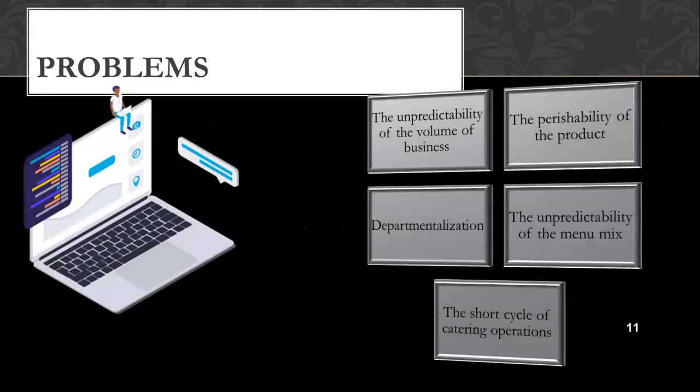Now, what are the problems in the food and beverage control system? We are going to talk about six main problems: unpredictability of the volume of business, perishability of the product, departmentalization, unpredictability of the menu mix, and the short cycle of catering operations.